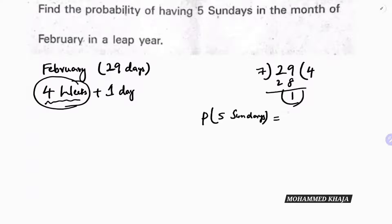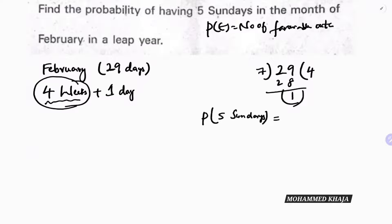The formula for the probability of an event is: number of favorable outcomes divided by total number of outcomes.